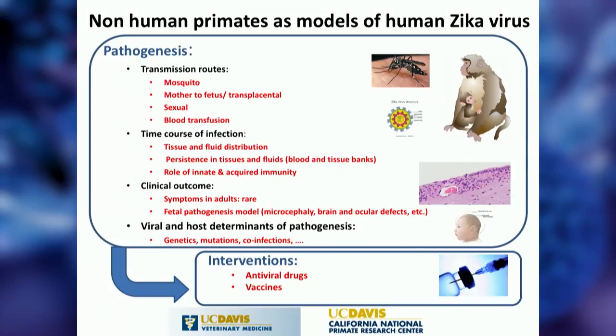I want to devote the rest of the presentation to the non-human primate model of Zika we've been developing. The placental and neurological development of non-human primates is closer to humans than that of mice. We've been developing this model to study pathogenesis, transmission, timing of infection — which obviously can't be done in human studies — clinical outcome, and ultimately viral and host genetic determinants of pathogenesis, all with the goal of developing interventions like therapies or vaccines to prevent infection or mitigate disease.